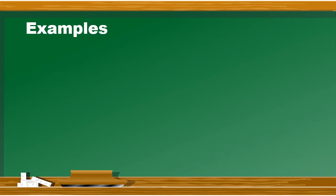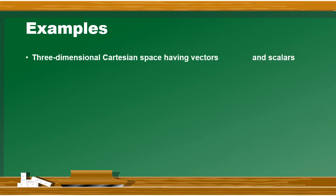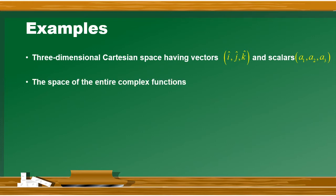तो vector space की examples क्या हैं? उसमें एक example दिखी जा सकती है - three-dimensional Cartesian space जिसमें हमें दो चीज़ों की ज़रूरत पड़ेगी: एक set of vectors होगा जो के i, j, and k होंगे, और दूसरा set scalars का होगा जिसको a1, a2, a3 कहा जा सकता है. इसी तरह से another example है space of entire complex functions and there are many other examples possible.